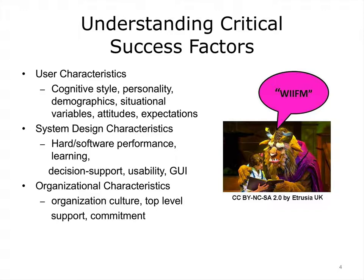The last critical success factor includes the organizational characteristics that can influence adoption. If the boss is not committed or bought into the idea of automation in the environment, then the chances of success are greatly lessened. Conversely, if the environment is full of digital natives who grew up with technology and fundamentally think differently about it, then adoption of HIT may be less of an issue. Ultimately, the organizational culture can make or break the health IT adoption process. These critical success factors should be acknowledged, understood, and planned for very early in any implementation process.